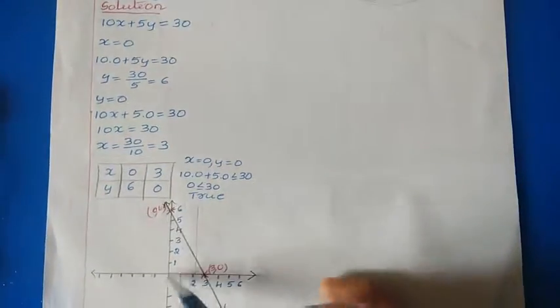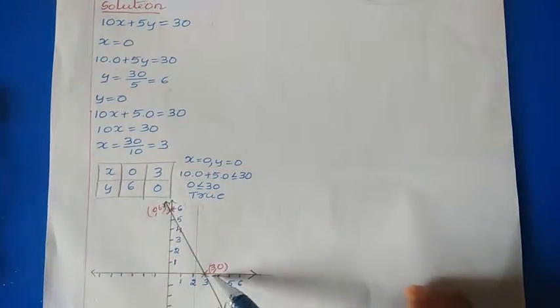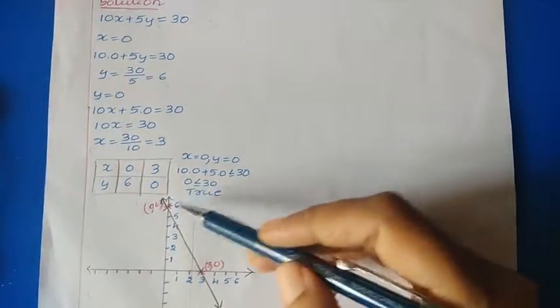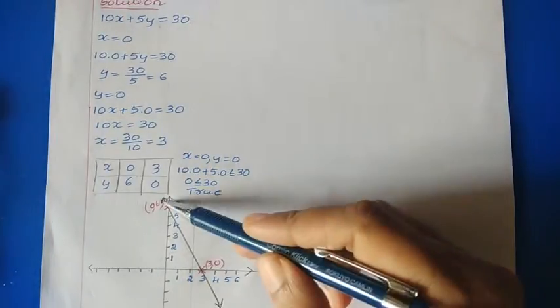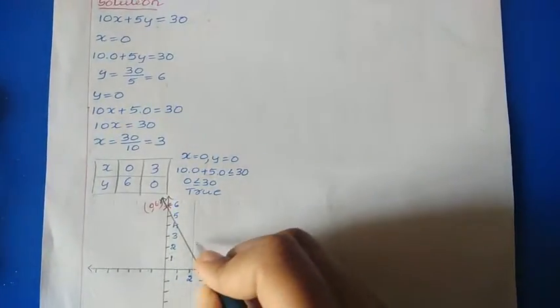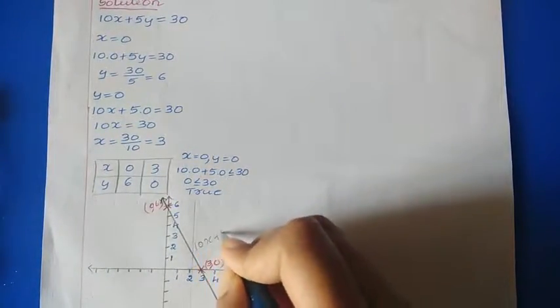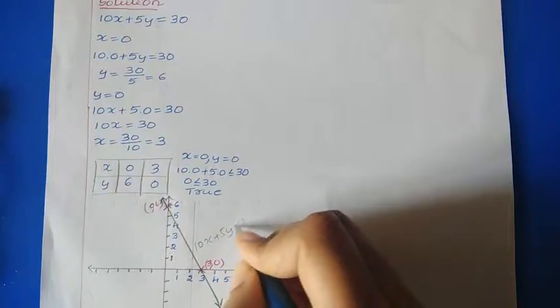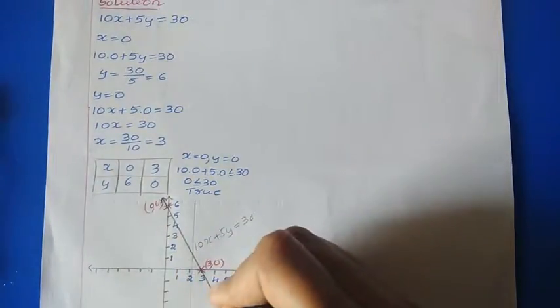So here we have the point (0, 6) and the point (3, 0). Just join these two points and we get a straight line. This straight line represents 10x plus 5y equal to 30.